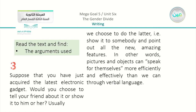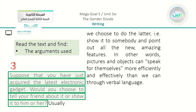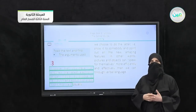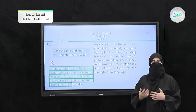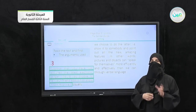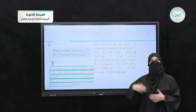In paragraph three, the argument is: 'Suppose that you have just acquired the latest electronic gadget. Would you choose to tell your friend about it or show it to him or her?' This is another way to prove that something is better than another — when talking about a new gadget or device, it is much better to show a person rather than just talk about it.